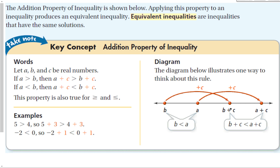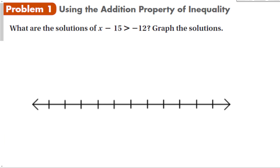Basically, it just means that if we add the same thing to both sides of the equation, the equation will stay balanced, whether it is an equality or an inequality. My steps to solve these are going to be the same as with an equality — isolate the variable by doing inverse operations. So I'm going to add 15 to both sides, which keeps my equation balanced. So we have x is greater than 3.